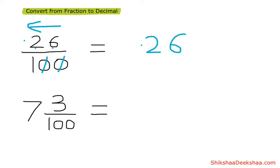But we can't write our answer like this. We don't have any whole number before the point, before the decimal. So we should write zero, and our answer is zero point two six.